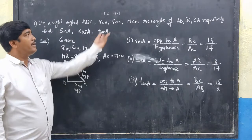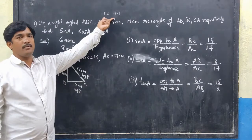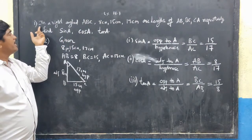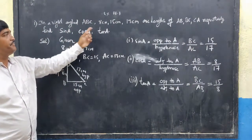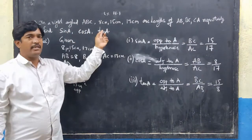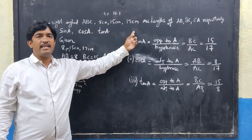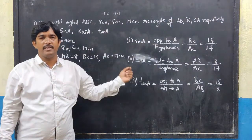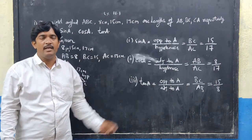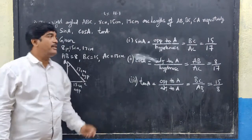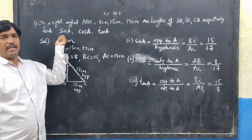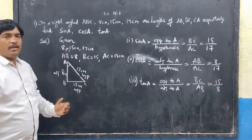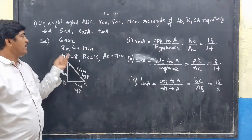Today we learn the exercise problems of trigonometry. The first problem is: given that in a right angle triangle ABC, 8 cm, 15 cm and 17 cm are the lengths of the sides AB, BC and CA. Find the value of sine A, cos A and tan A.